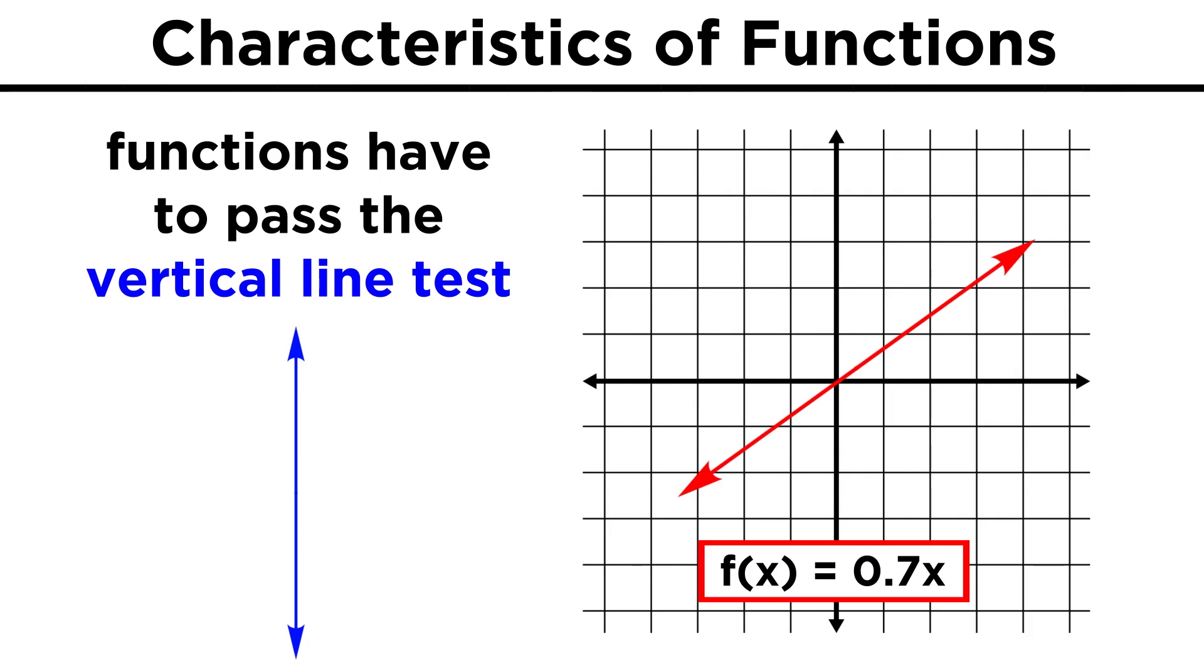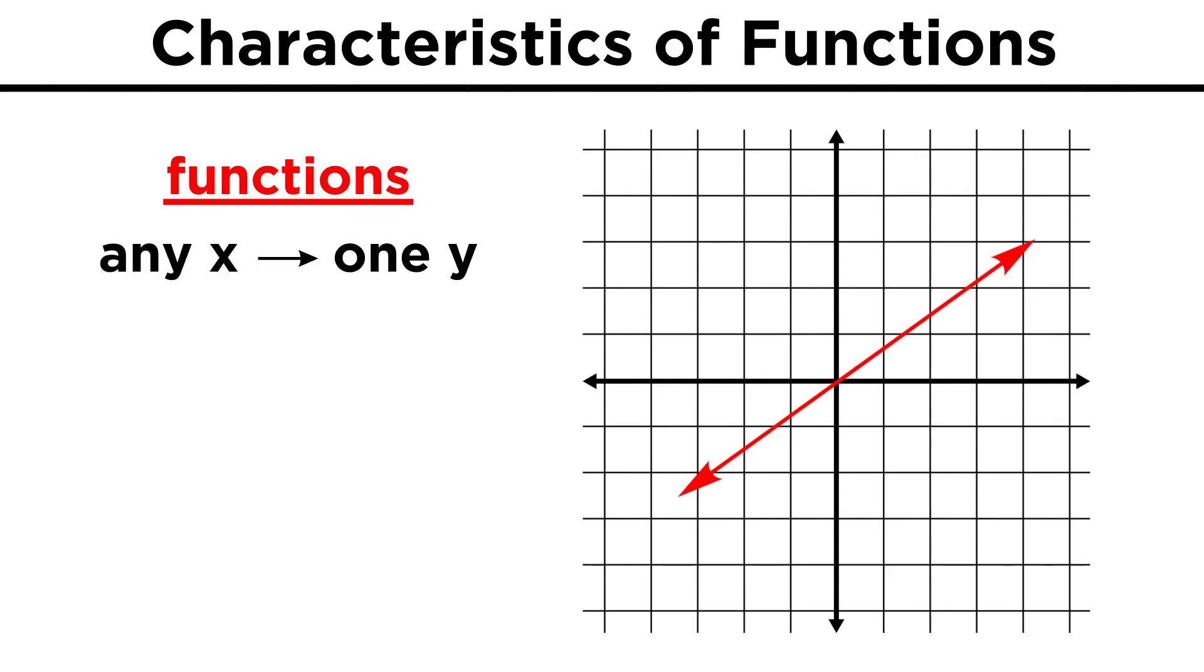For that reason, for a graph to be representative of a function, it must pass the vertical line test. Since a function can only have one output, or y value, for each unique input, or x value.